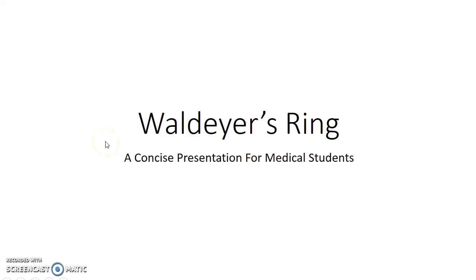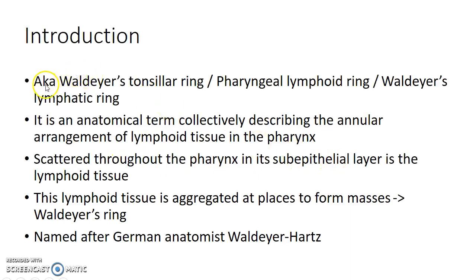Hello guys, this is Indian Milko and in this video we are going to see about Waldeyer's ring. This is a concise presentation for medical students. Waldeyer's ring is also known as Waldeyer's tonsillar ring, pharyngeal lymphoid ring, or Waldeyer's lymphatic ring. It is an anatomical term collectively describing the annular arrangement of lymphoid tissue in the pharynx.